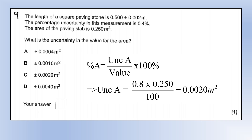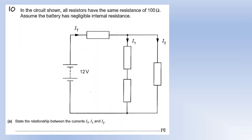Question 9: a square paving stone has length 0.5 ± 0.002 m, with a percentage uncertainty of 0.4%. The area is 0.250 m². Since area = L², the percentage uncertainty in area is doubled to 0.8%. Rearranging to calculate the absolute uncertainty in the area gives option C.